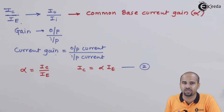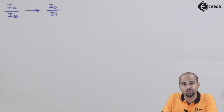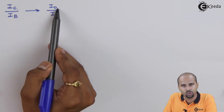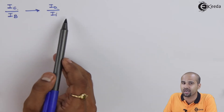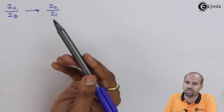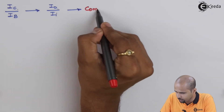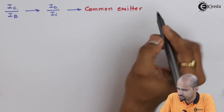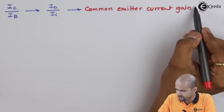Now we will go for another ratio: IC divided by IB. Again expressing this as IO divided by II — treating collector current as output and base current as input. Since emitter current is not in the picture, emitter is common for both output and input. So this turns out to be the common emitter current gain.